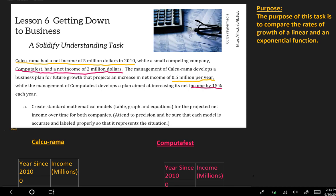Since we know the purpose of this task is to compare a linear and exponential function, let's identify that Calcurama is linear and Computafest is exponential. I can tell that Calcurama is linear because it says per year. That indicates a constant rate of change, $0.5 million per year. Every year they're making $0.5 million more.